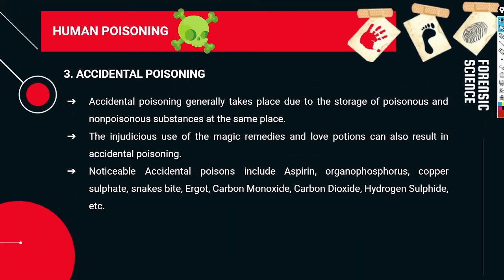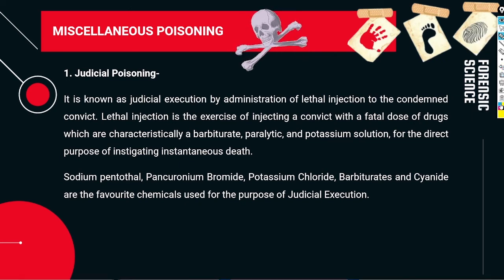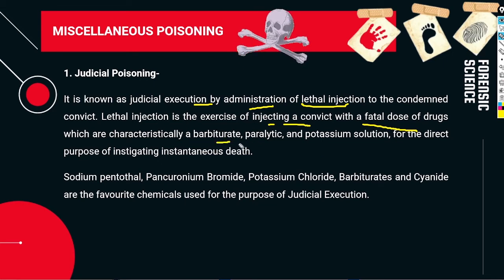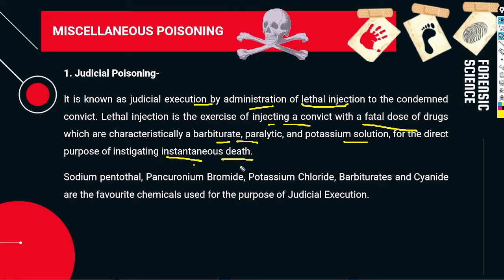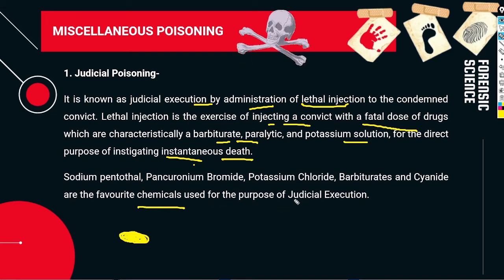Judicial poisoning refers to judicial execution by administration of a lethal injection to a condemned convict. A lethal injection involves injecting a person with a fatal dose of drugs — such as barbiturates, paralytics, or potassium solution — with the intent of causing death. Specific agents used include sodium pentothal, pancuronium bromide, potassium chloride, barbiturates, and cyanide.